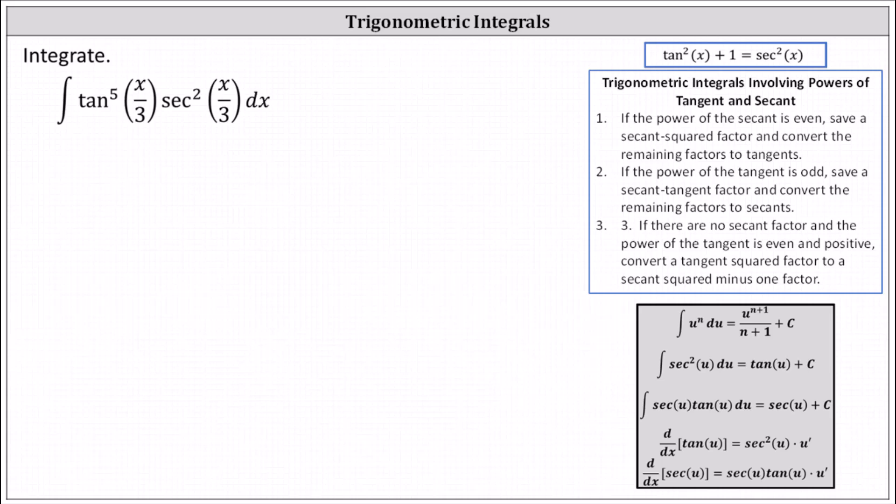But if we do look at the notes, notice for number 1 it states if the power of the secant is even, which we have, it's 2, save a secant squared factor and convert the remaining factors to tangents, which again we already have one factor of secant squared and everything else involves tangent.